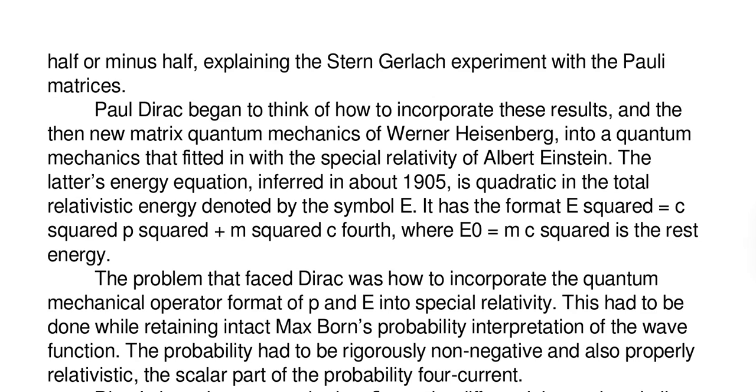is quadratic in the total relativistic energy denoted by the symbol E. It has a format E squared equals C squared P squared plus M squared C fourth, where E zero equals MC squared is the rest energy.